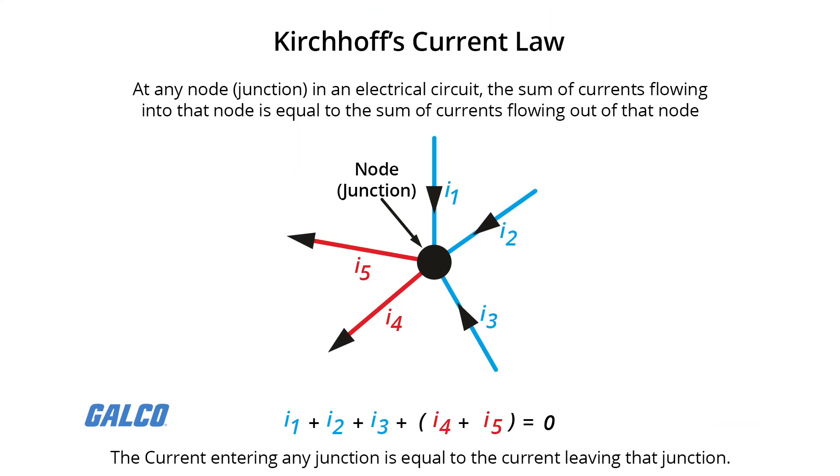If two or more components are connected in parallel, they have the same potential voltage across their ends. The voltage potential across the components is the same in magnitude and must have identical polarities. The same voltage is applied to all circuit components connected in parallel. The total current is the sum of the currents through the individual components, in accordance with Kirchhoff's current law.